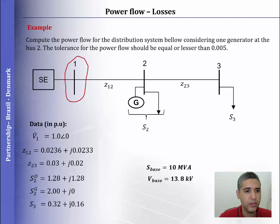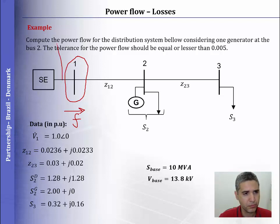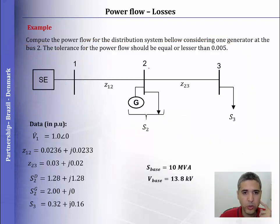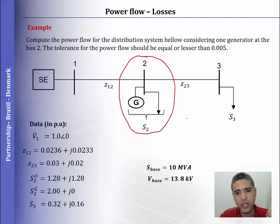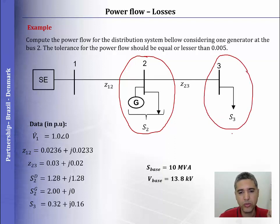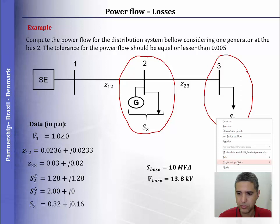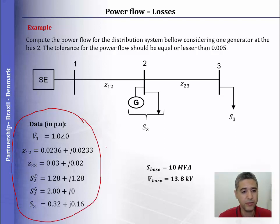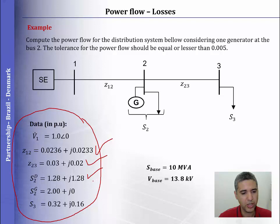Here in this system we have the border of the system. This is the node where we want to obtain the power flow. Here we have the main grid or the transmission system, and here we have the distribution system. In the distribution system we have node 2 with one generation and one load, and node 3 with one load.